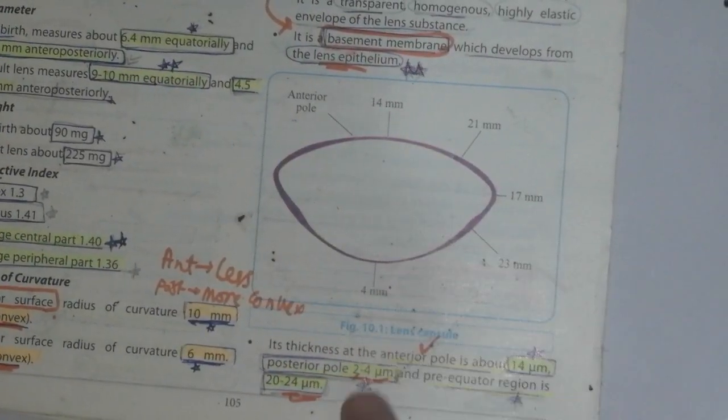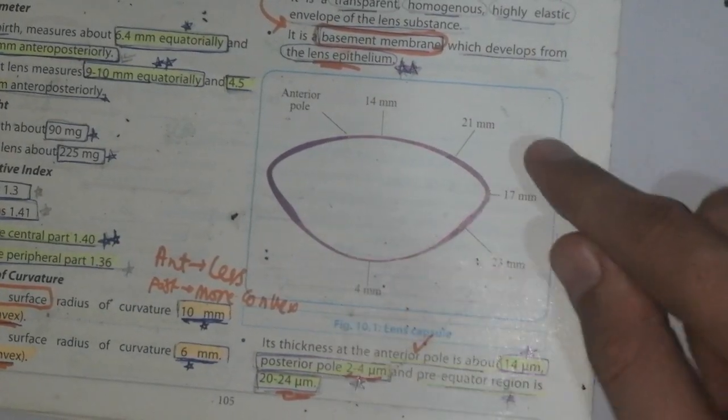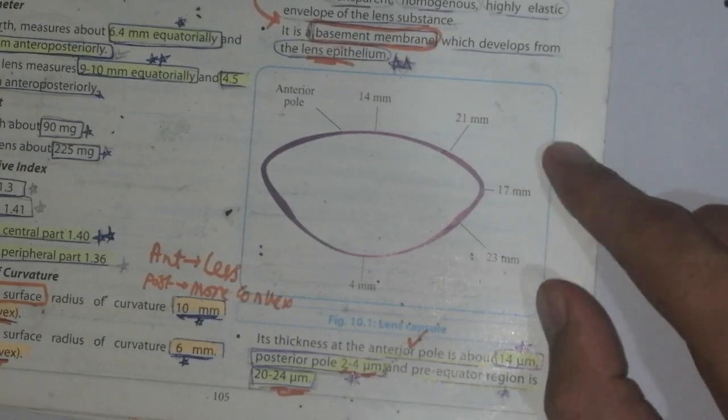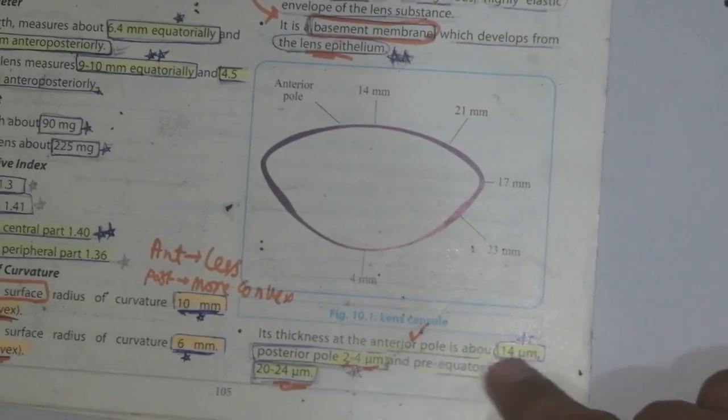At the posterior pole, 14 micrometers, here is the posterior pole that is 4mm. Here is peripherally 21mm, 23mm, 17mm. Overall thickness of the anterior pole is 14 micrometers.